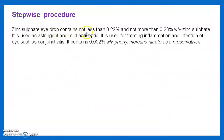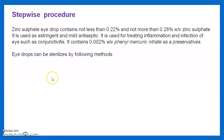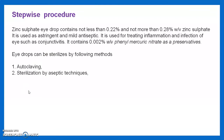Zinc sulfate eye drop IP contains not less than 0.22% and not more than 0.28% w/v zinc sulfate. It is used as an astringent and mild antiseptic for treating inflammation and infection of the eye such as conjunctivitis. It contains 0.002% w/v phenyl mercuric nitrate as a preservative. Eye drops can be sterilized by autoclaving, aseptic filtration, or heating with bactericide at 98 to 100°C for 30 minutes.